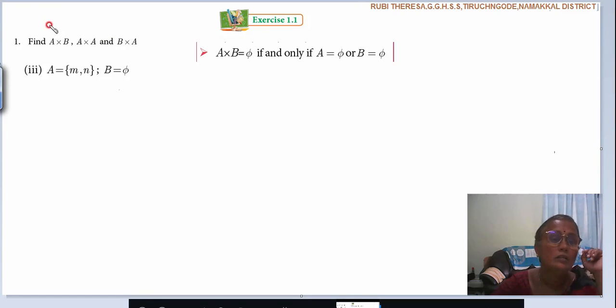Papu, listen here. Find A cross B, A cross A and B cross A. What they have given? A equals M, N. B equals M, T set. This symbol represents M, T set.